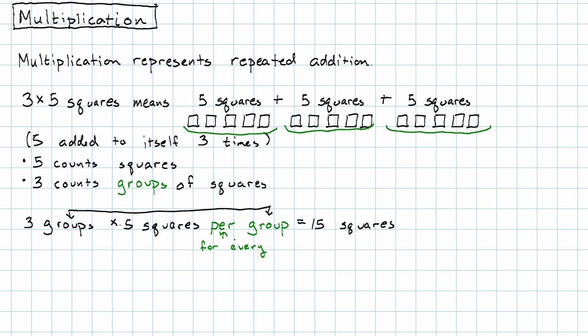So these two nouns are the same. 3 groups times 5 something per group. And then the something, squares in this case, is the noun in our answer.